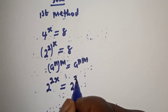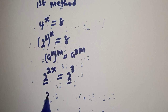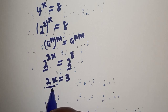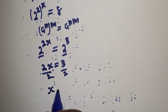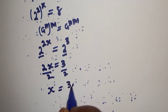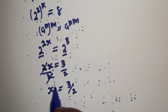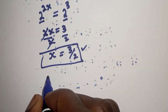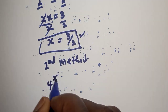2 raised to power 2s is equal to 8, which can be written as 2 raised to power 3. We have the same base, so 2s is equal to 3. Dividing both sides by 2, s is equal to 3 over 2. That is the final answer for the first method.